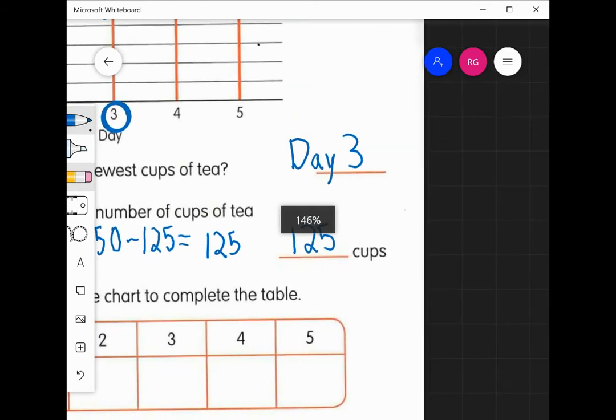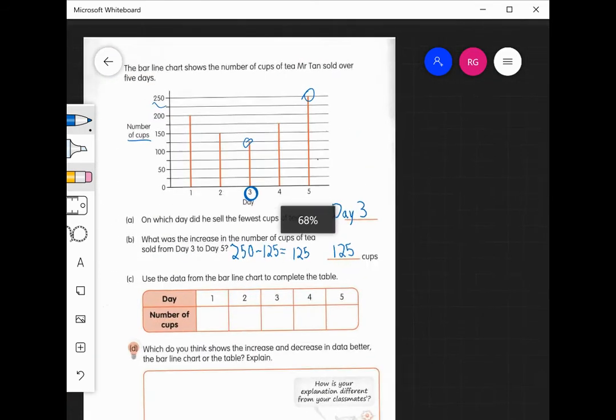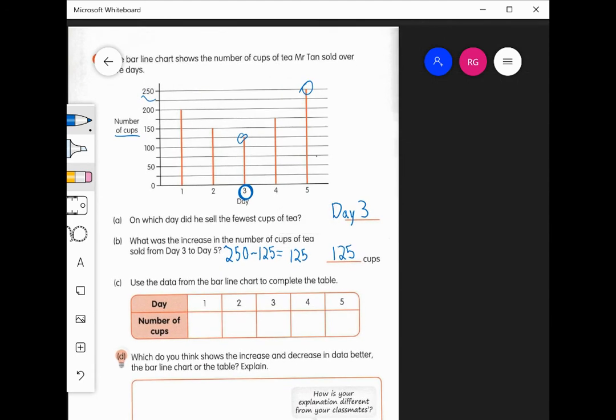Okay, that's the difference or the increase from day three to day five. So we say the number of cups increased by 125 from day three to day five.